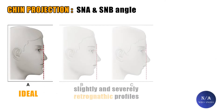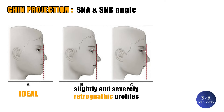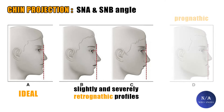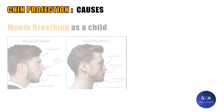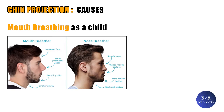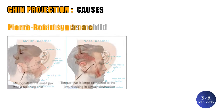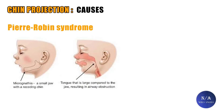Profile A is clearly an ideal orthognathic profile. B and C are respectively slightly and severely retrognathic profiles — sadly common these days — and D is prognathic. So what is the cause of this flaw? This condition, also known as recession, is believed to be genetic or caused by childhood habits, mainly mouth breathing. In more serious cases it can be caused by different syndromes that create a blockage of the airways, such as Pierre Robin syndrome.